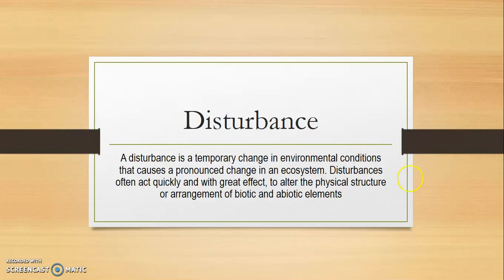So what basically disturbance is, it is a temporary change in the environmental condition that causes a pronounced change in an ecosystem. Disturbances often act quickly and with great effect to alter the physical structures or arrangement of biotic as well as abiotic elements.